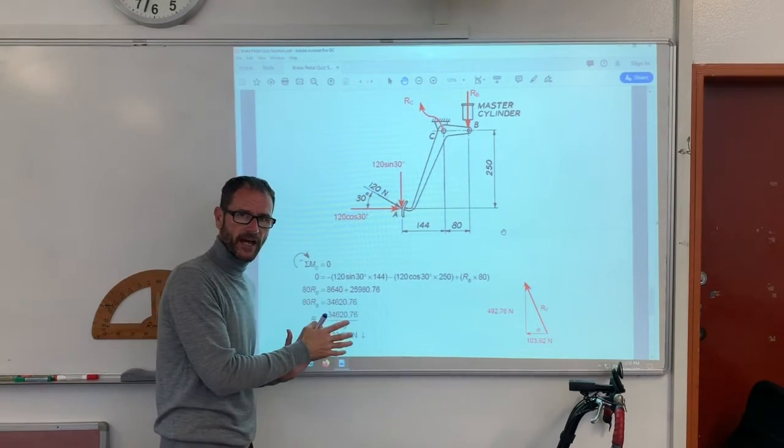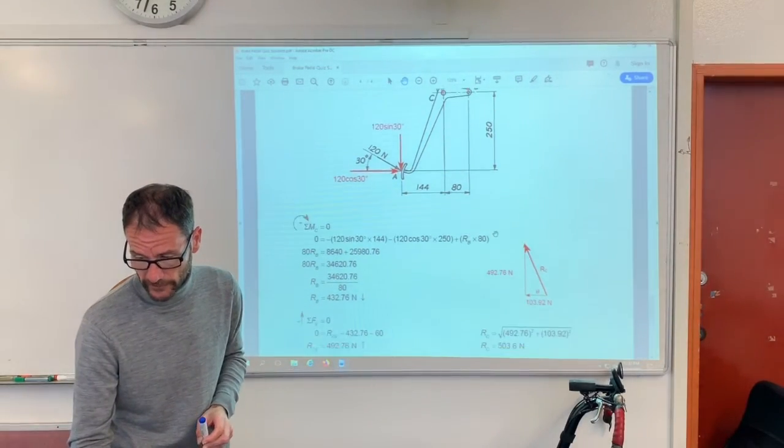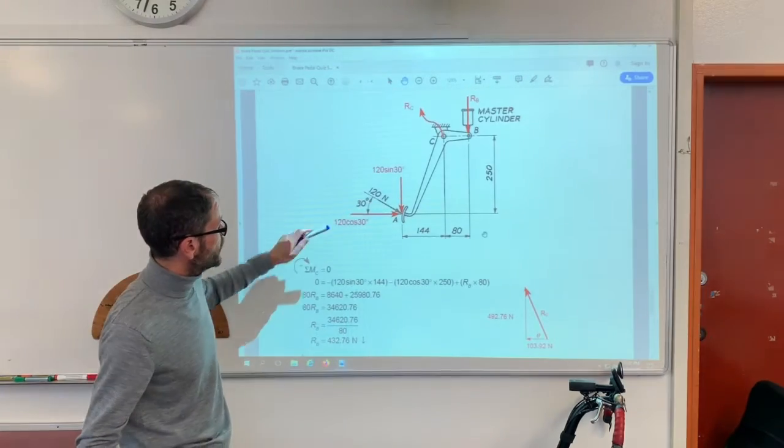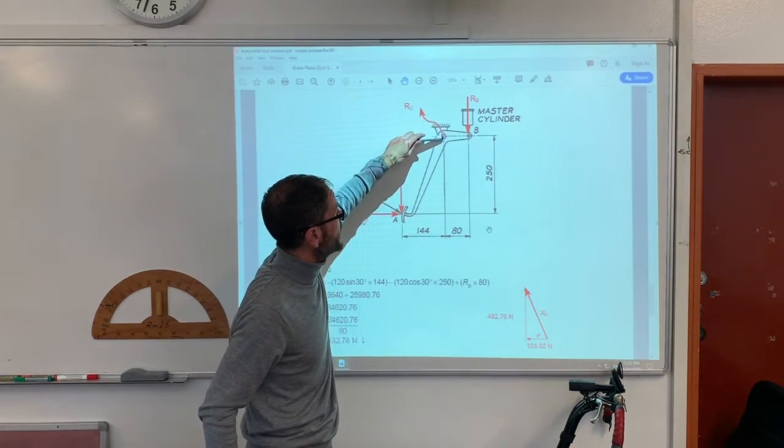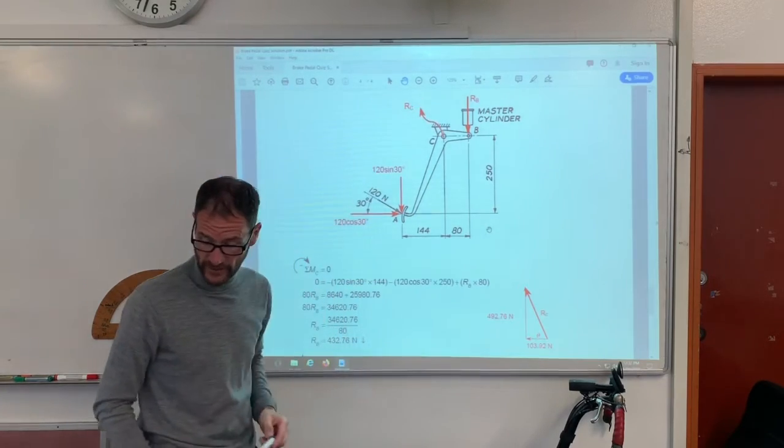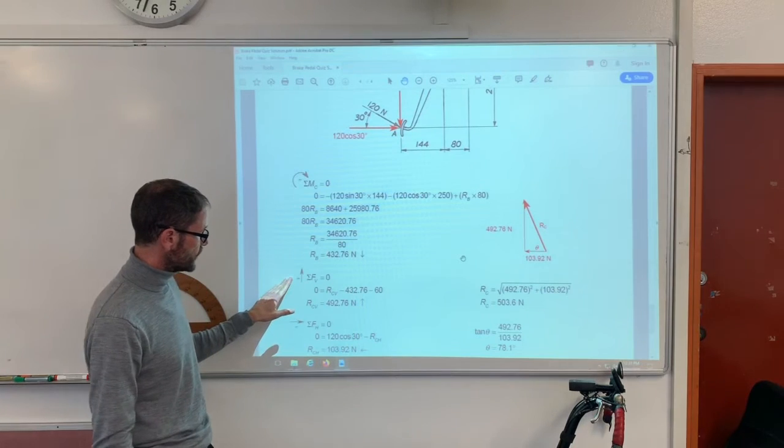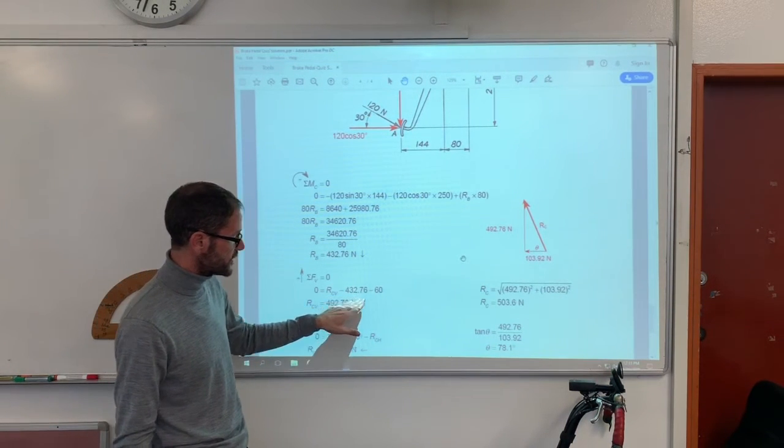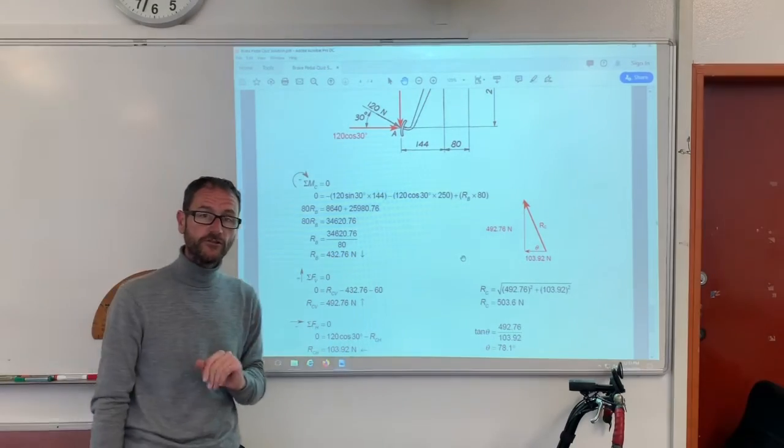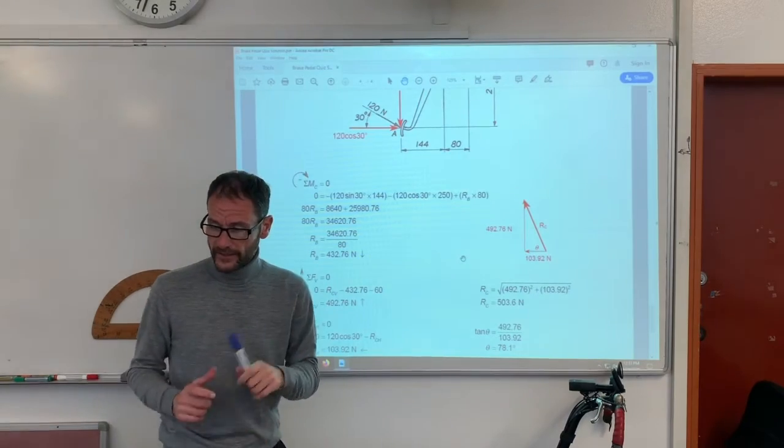Now, that's the easy part, really, because now comes the convoluted summing forces vertical and horizontal. So, remember, I've got a vertical component here. I've got a vertical force here. So, I now need to find what the vertical reaction is here. So, I'm going to add those two together. Summing forces vertical. I've got RC there going up minus 432.76 minus 60. And I'll end up with 492.76 newtons going up.